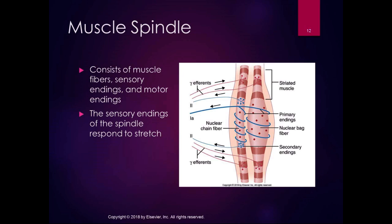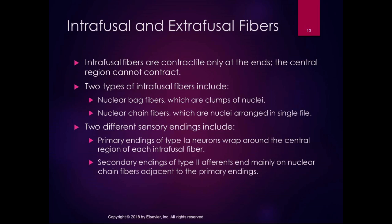Remember back in kinesiology when we talked about the shapes of muscles, and one of the shapes was fusiform — fat in the middle and tapered on the ends, kind of like the biceps? The sensory nerve-ending part of the muscle fiber is called the intrafusal fibers. The skeletal muscle part is the extrafusal muscle fibers, and that fusiform area in the middle is where the innervation gets input. The intrafusal fibers are contractile only at the ends — the central region can't contract.